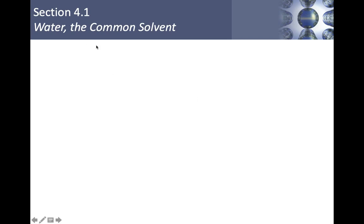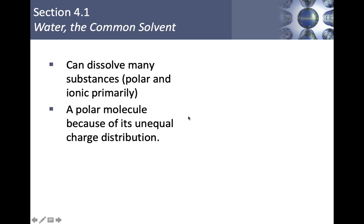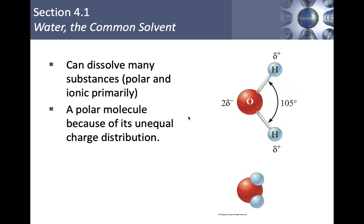The first section is about water. Something you need to be aware of is that water can dissolve many different types of substances. Primarily the ones we're interested in are polar substances and ionic substances. You already know what ionic bonds and ionic compounds are. All you really need to know for now is that water is polar, and the reason why it's polar is because of an unequal charge distribution. If we look at a water molecule in a particle diagram or a ball-and-stick model, it looks like this.